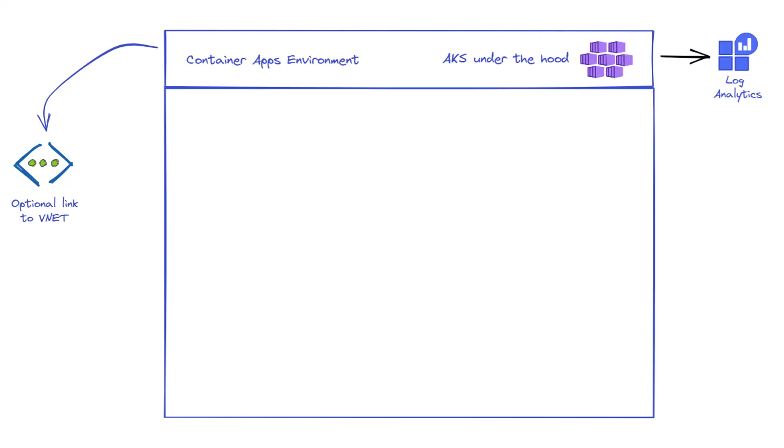By default, an environment gets a public IP, and all containers that have ingress get an automatic DNS name linking to that public IP. For most customers who need these on the internal network, you can optionally link a Container Apps environment to a virtual network — but this must be done at creation time, not afterwards. If that virtual network is linked to your on-premises network via VPN, you can connect to these container apps from the internal network.